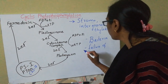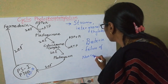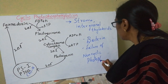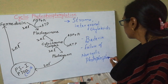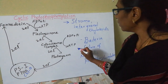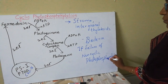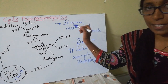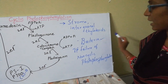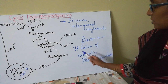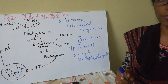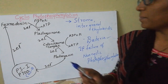If there is failure of non-cyclic photophosphorylation, then there is a chance of cyclic photophosphorylation in all green plants. This usually occurs in prokaryotes, that is bacteria, and in plant cells if there is failure of non-cyclic photophosphorylation, then it leads to cyclic photophosphorylation.